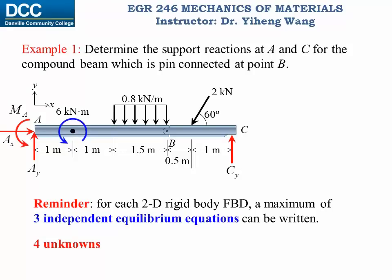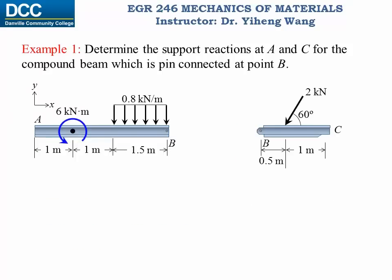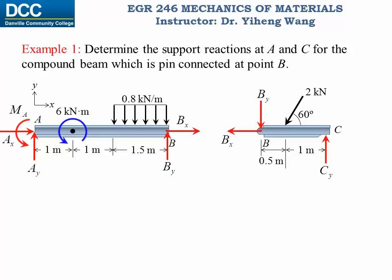In order to solve this problem, we need to draw separate free body diagrams for members A-B and B-C. For member AB on the left, we have the three support reactions from the fixed support. At point B, because we have a pin connection, there are two force reactions: a horizontal one and a vertical one. For member BC on the right, we have the vertical force from the roller support, and at point B we again have forces Bx and By, but they must be of opposite directions to the reactions drawn for member AB.